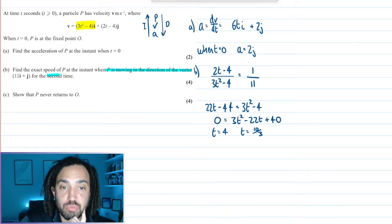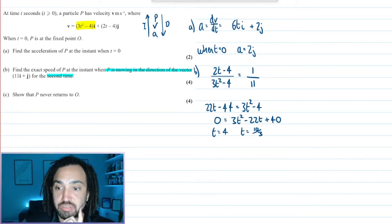Now it does say here that they want it the second time that it is moving in that direction. So that would be t is equal to 4.